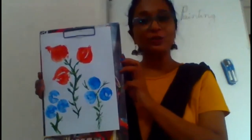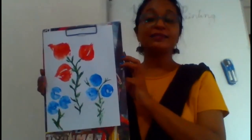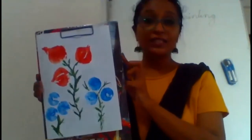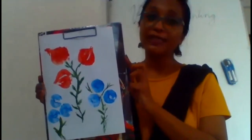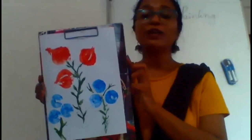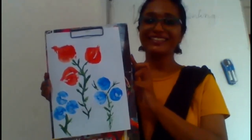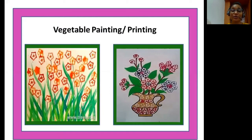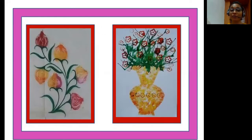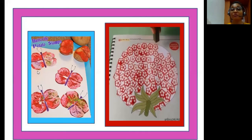You can use vegetables like onion, green chili, lemon, capsicum, and ladies' finger to make your vegetable painting. After completing your painting, take a picture and post it. For more ideas on vegetable painting, look at the pictures on screen: some are painted using ladies' finger, one uses onions, butterflies were made using potatoes, and another uses ladies' finger prints. Please try to do it!